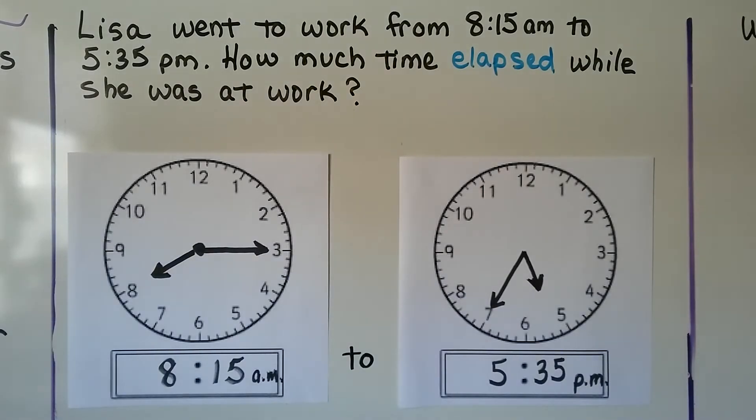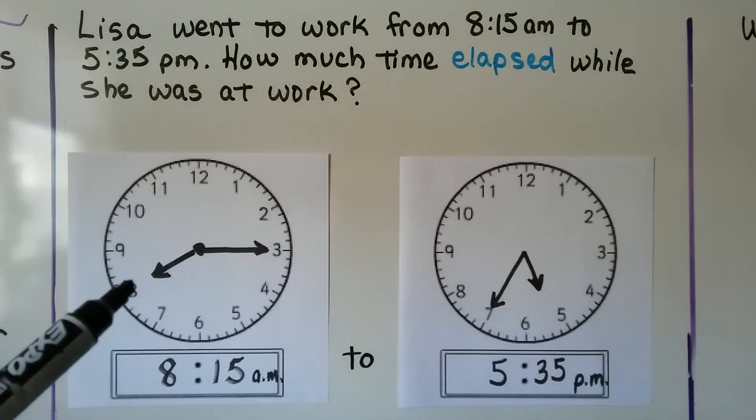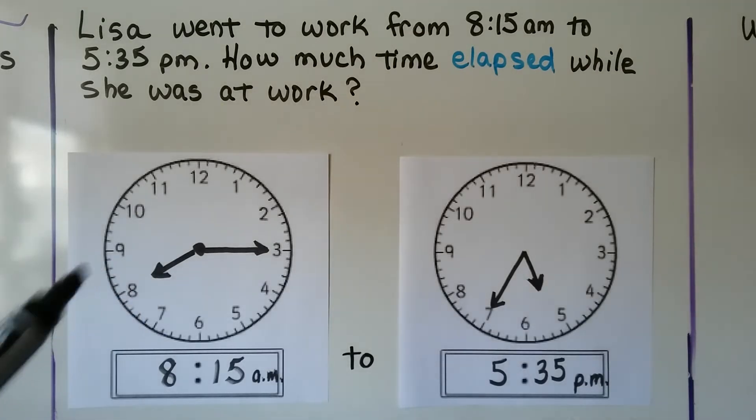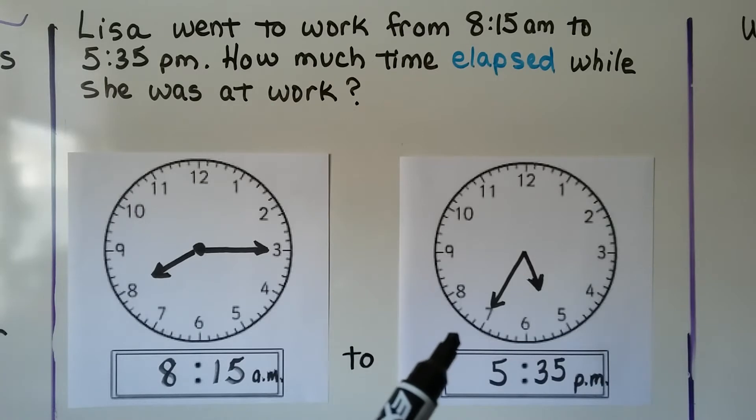Lisa went to work from 8:15 a.m. to 5:35 p.m. How much time elapsed while she was at work? So she started work at 8:15 a.m. in the morning and she worked until 5:35 p.m. in the evening.